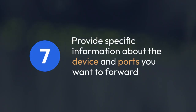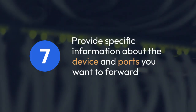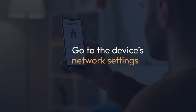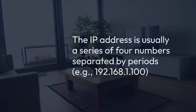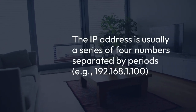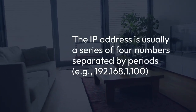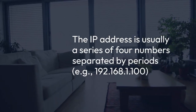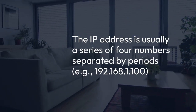The process now involves providing specific information about the device and ports you want to forward. First, you'll need the local IP address of the device you wish to make accessible from the outside world. Find this by going to the device's network settings or on your Eero app under the Devices tab. The IP address is usually a series of four numbers separated by periods, for example 192.168.1.100.